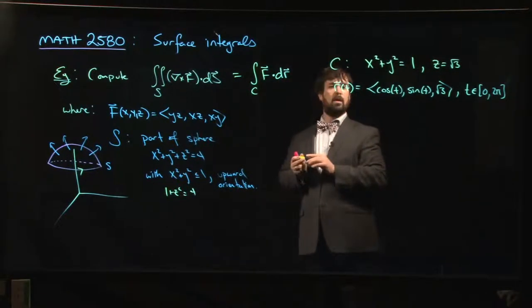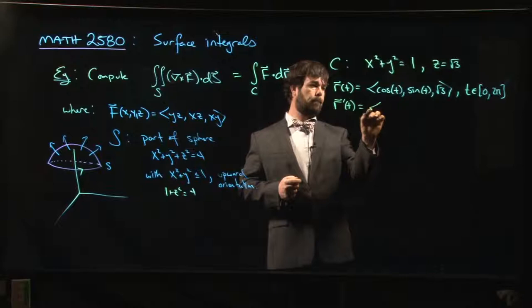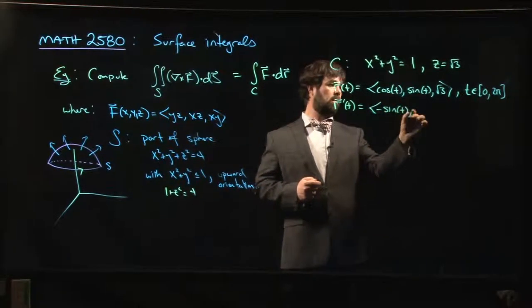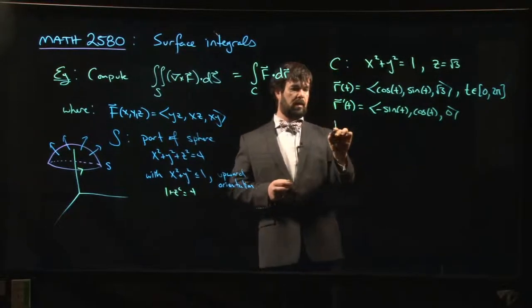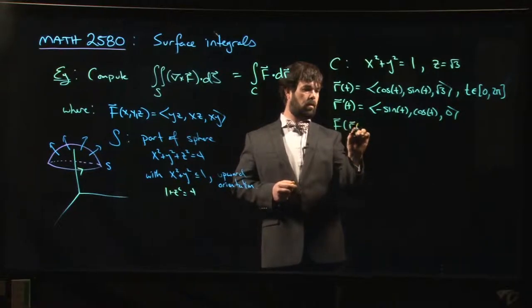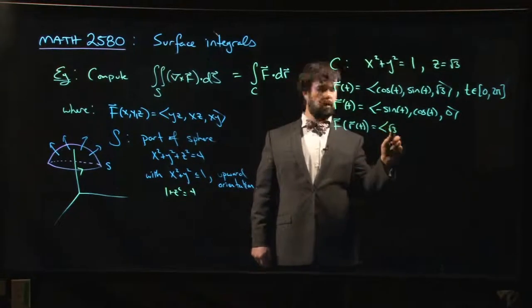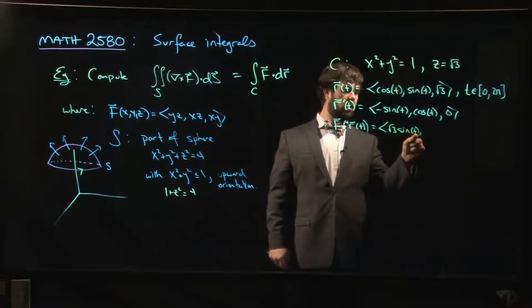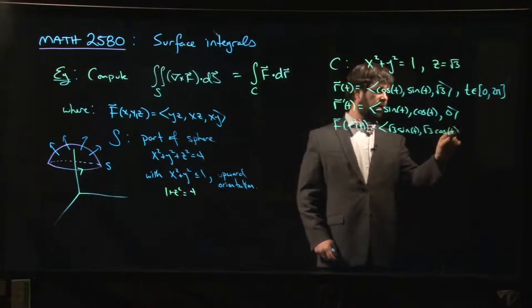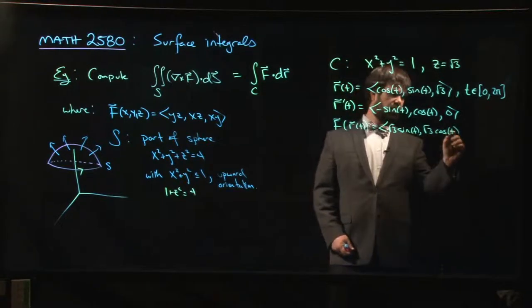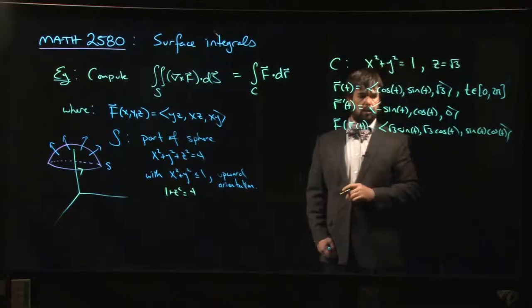We've got our parameterization, so we can calculate. We've got R of t. We can quickly calculate R prime: minus sine t, cos t, 0. We can calculate F of R of t. So here's F, it's going to be root 3 at sine t, then it's going to be root 3 cosine t, and then it's going to be x times y, so sine t cosine t.